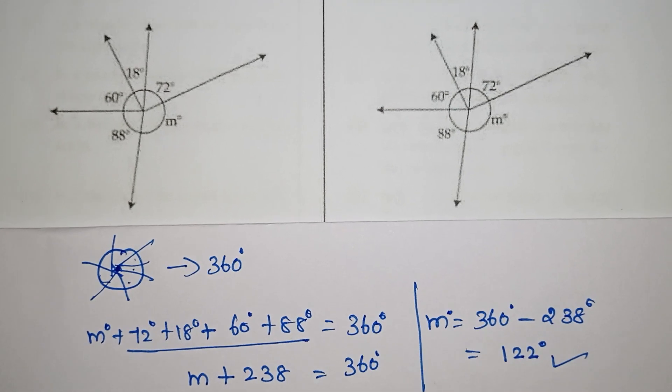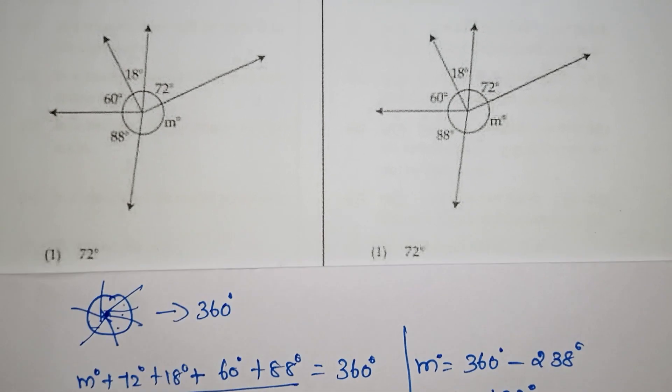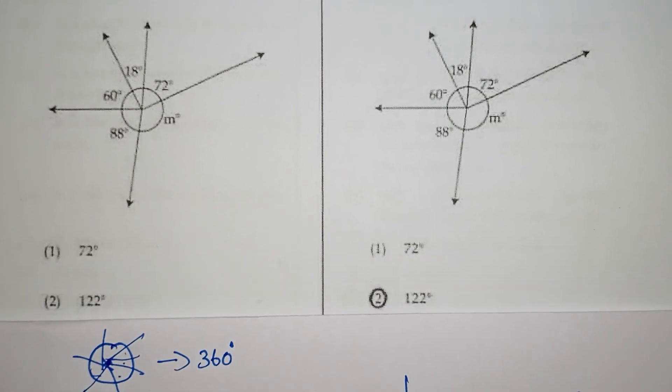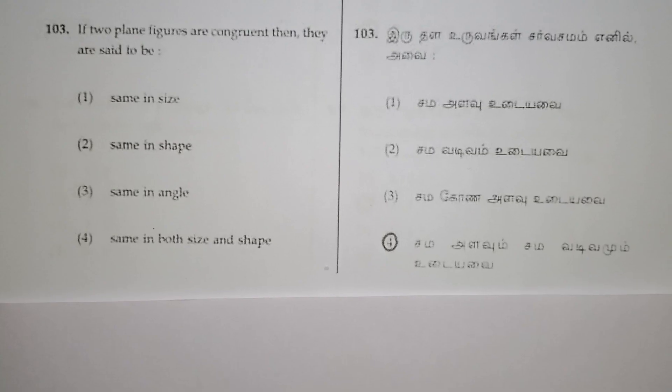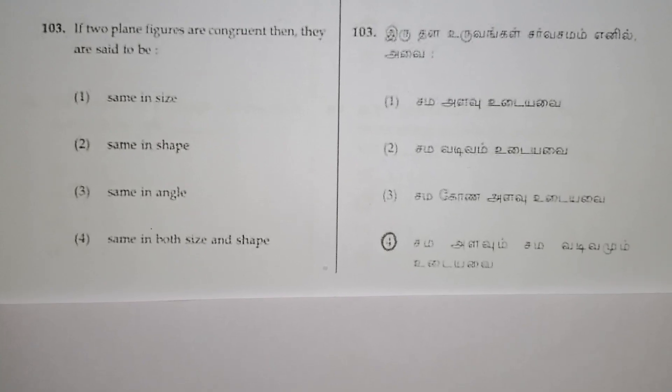360 minus 238 equals 122. So M equals 122 degrees. That is the final answer — 122, which is the 2nd option. Next question.